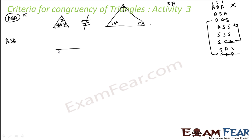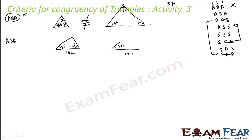Next is ASA — angle, side, angle. That means this angle, this side, and this angle are given. Drawing another triangle with 30 degrees and 60 degrees on either side of a 10 cm side, you will see that these two triangles exactly overlap. So ASA holds — if angle-side-angle conditions match, the triangles are congruent.